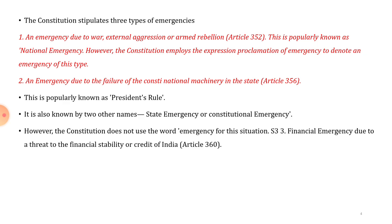The constitution stipulates three types of emergencies. First, the emergency due to war, external aggression or armed rebellion — this is popularly known as national emergency, however the constitution employs the expression 'proclamation of emergency' for this type. Second, an emergency due to the failure of constitutional machinery in the state, popularly known as President's Rule, also called state emergency or constitutional emergency. Third, financial emergency due to the threat to financial stability or credit of India.